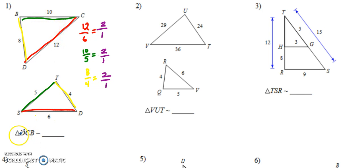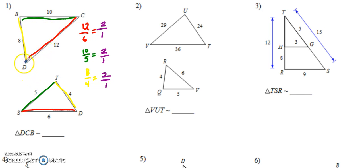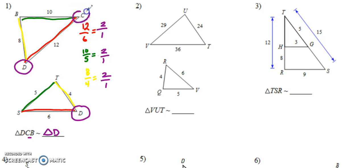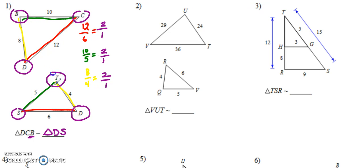Now let's make sure we write the statement correctly. Triangle DCB: that means we go D first, then C second, then B third. We need to make sure the other triangle lines up the same way. It helps to highlight the sides with different colors, because then you can see that D is at the corner of the longest side and the shortest side — and that matches with D over here. C is at the corner of the longest side in red and the medium side in green — that'll be S. And B is at the corner of the shortest side and the medium side — that's T. So: triangle DCB is similar to triangle DST, by side-side-side similarity.